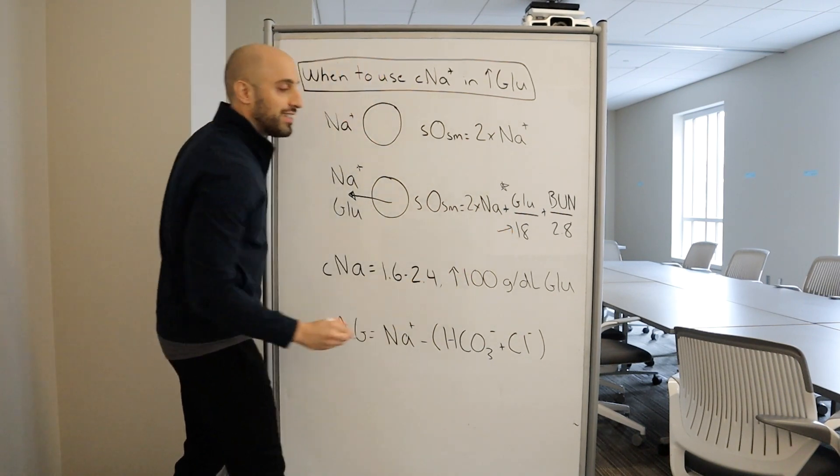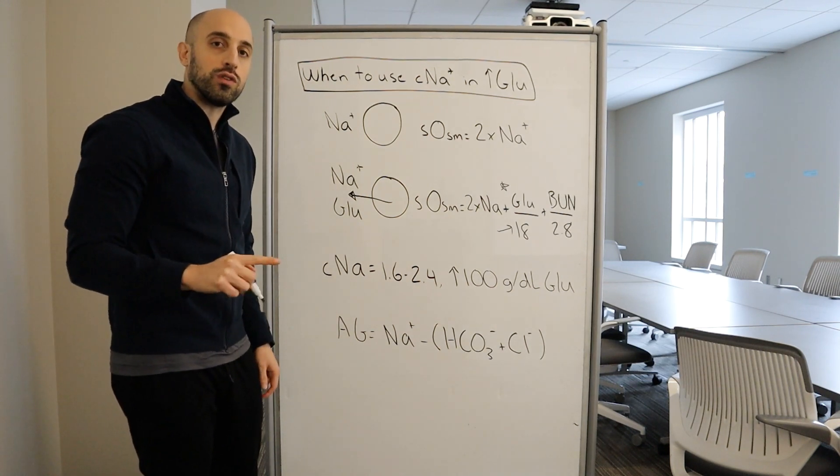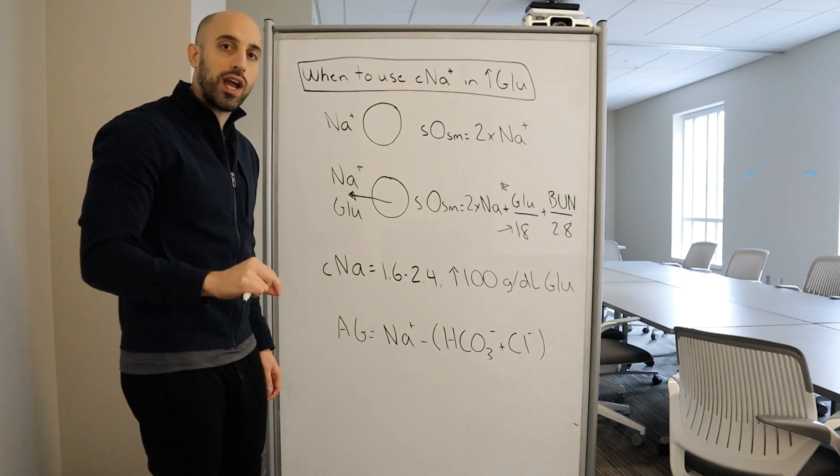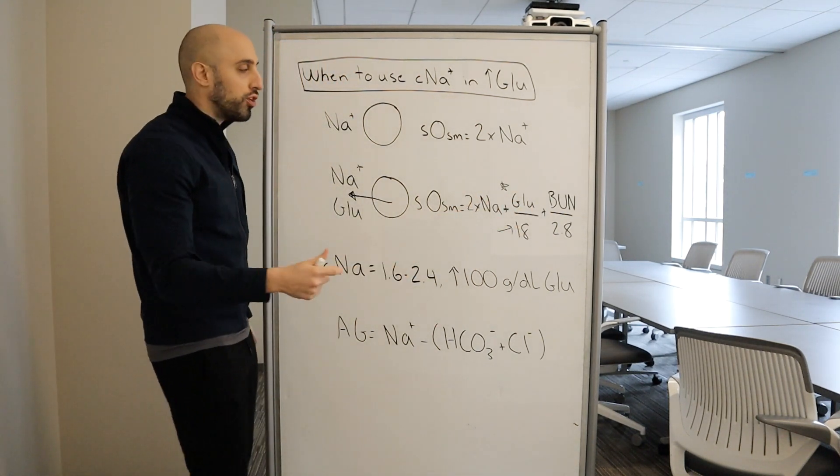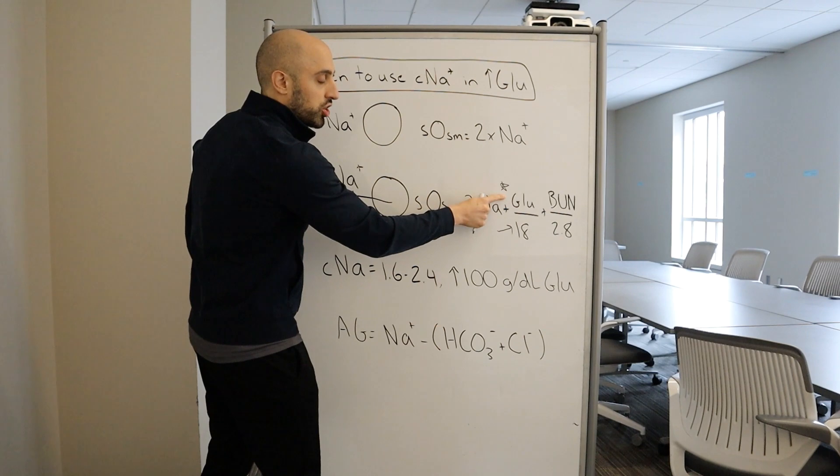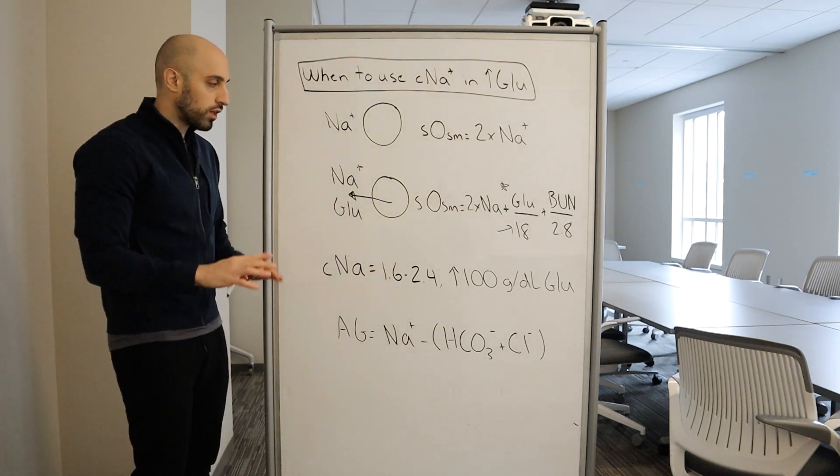Why is this number 18? Well, it happens to be the molecular weight of glucose is 180 grams per mole. So to determine the number of osmols that glucose is contributing, you take the concentration and you divide it by its molecular weight.